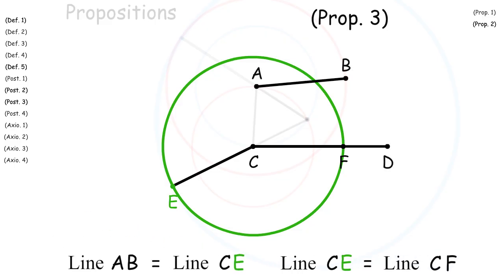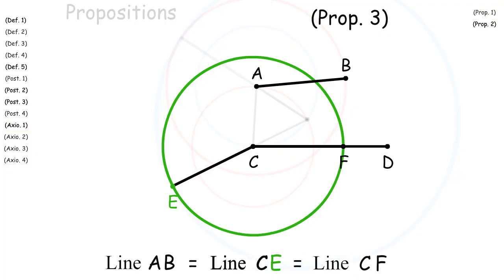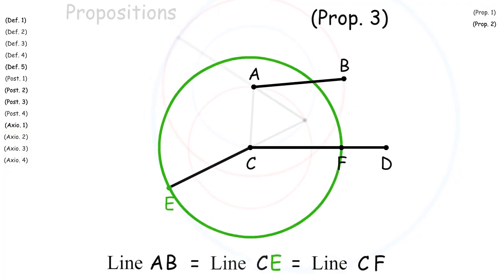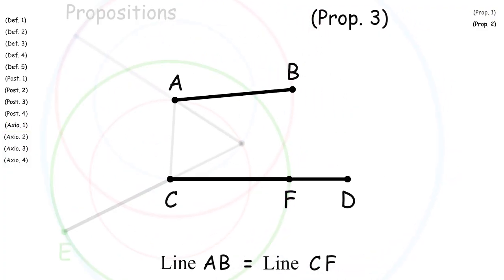So we have line AB is equal to line CE, and line CE is equal to line CF. Using axiom 1, we can show that all three lines are equal. And from this, we can easily show that line AB is equal to line CF.